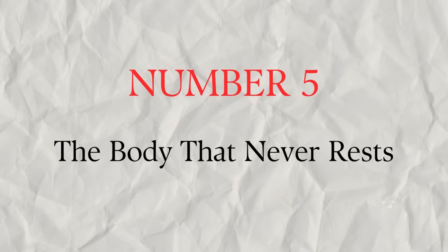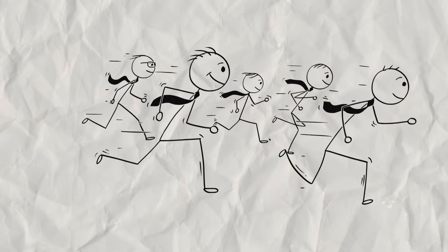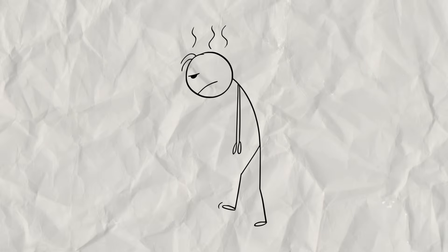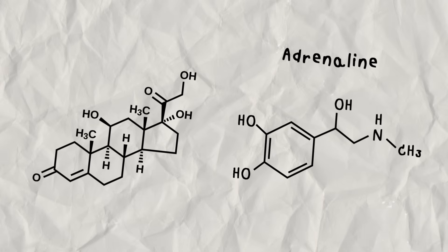Number five, the body that never rests. Your body's stress response system is designed for short sprints, not marathons. When faced with a threat, it releases cortisol and adrenaline to help you survive.